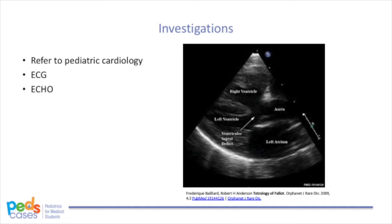So what happened to Josh? You and Dr. Smith agreed that Josh had concerning features for a pathological murmur. Thus, you helped write a referral to pediatric cardiology at the Stollery Children's Hospital. Josh's parents booked an appointment in two weeks. In the meantime, you sent Josh for an ECG. The ECG showed right axis deviation and right ventricular hypertrophy. A week later, the clinic received a letter from the pediatric cardiologist — Josh underwent an echo, which confirmed the diagnosis of Tetralogy of Fallot.